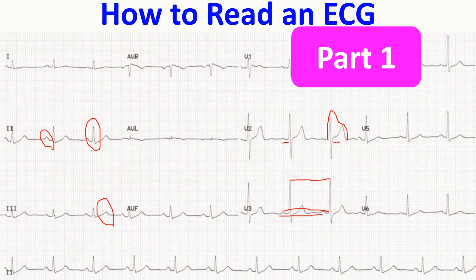Otherwise, a depolarization wave should have a polarity opposite to that of a repolarization wave. Now, where is atrial repolarization? Atrial repolarization is not visible in the usual surface ECG, but it corresponds to the PR segment and part of the ST segment. The upsloping ST depression seen here is supposed to be due to atrial repolarization, also called the TA wave.